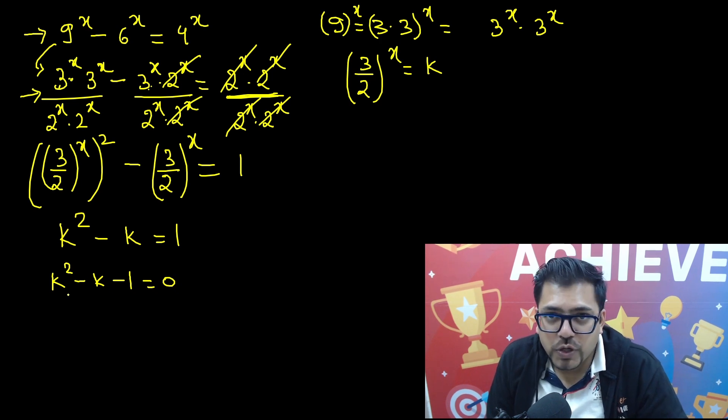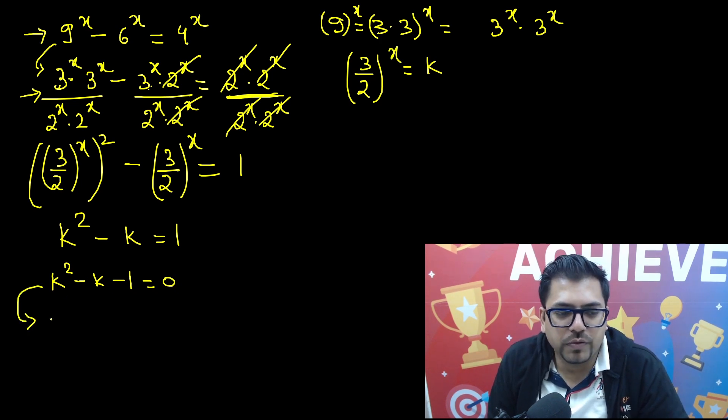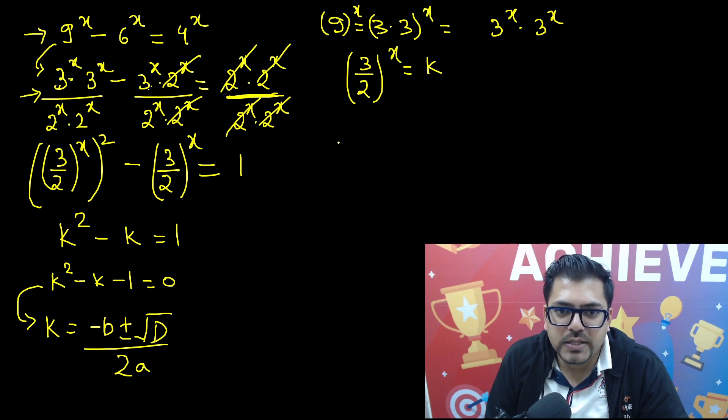So once you have got this, k squared minus k minus 1 equals to becomes your quadratic equation. For solving this quadratic equation, we need the formula that k equals to minus b plus minus root under d discriminant upon 2a.